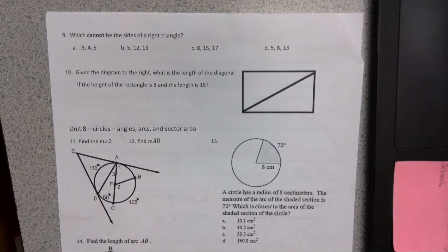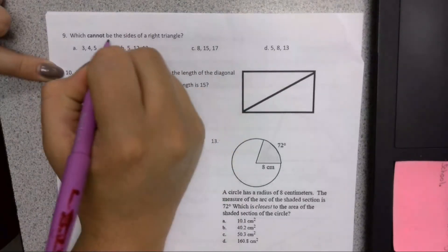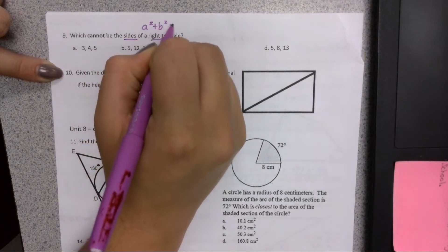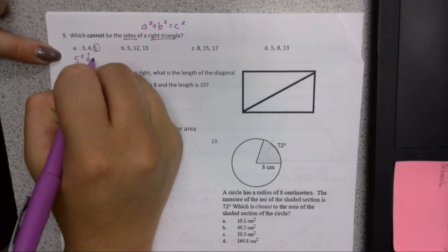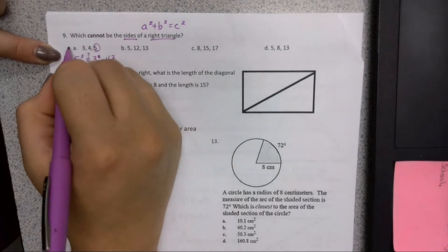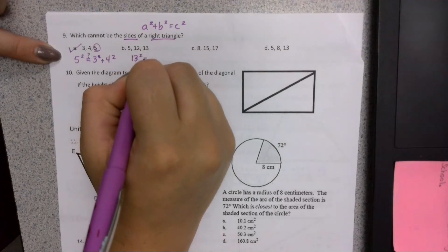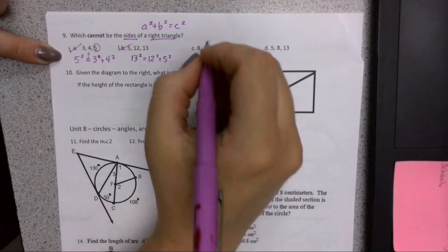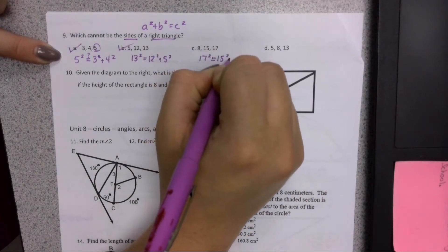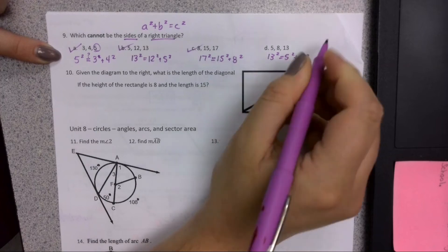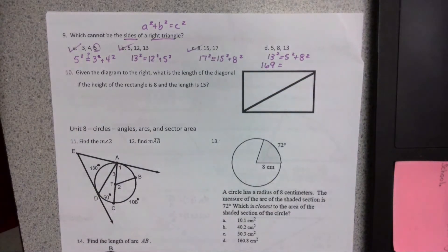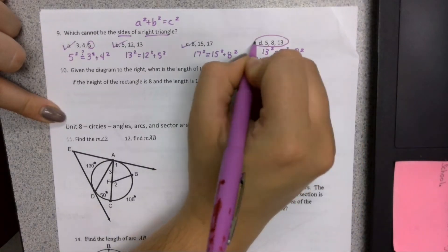The next type of questions we could get from this unit are about right triangles, specifically which cannot be the side of a right triangle in particular. So when we're looking at sides of right triangles, we're thinking of Pythagorean theorem. A squared plus B squared equals C squared, and we're going to check that our C squared does in fact equal our A squared plus our B squared. And it does for this first one. It does for this one. It does for this one, but it's not going to work for this one here. 13 squared is 169, and then 5 squared plus 8 squared is only 89. So this does not make a right triangle.